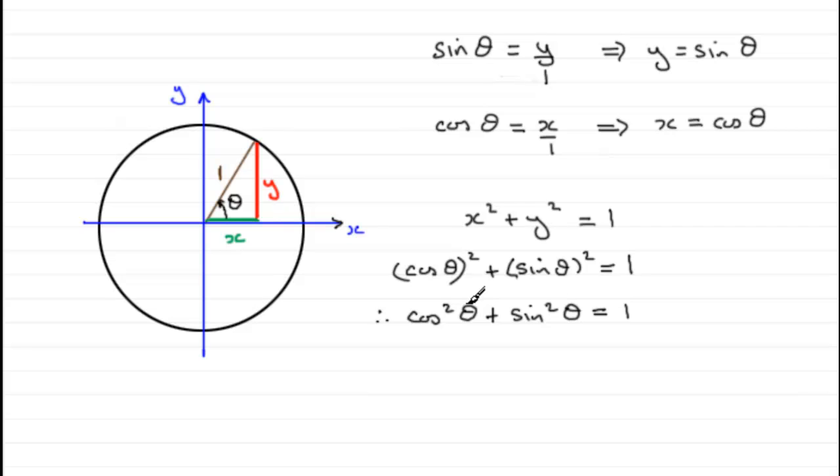Now in fact, this is true for any value of theta, not only between 0 and 90 degrees, any value of theta you like. So we say that this is not an equation, it's true for all values of theta. So we write this symbol, three lines, the identical sign.